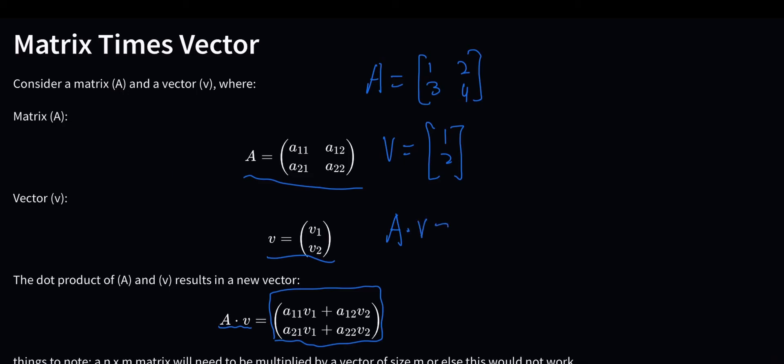So let's write that out, so we would have 1, 2, 3, 4, that would be multiplied with the vector 1 and 2.